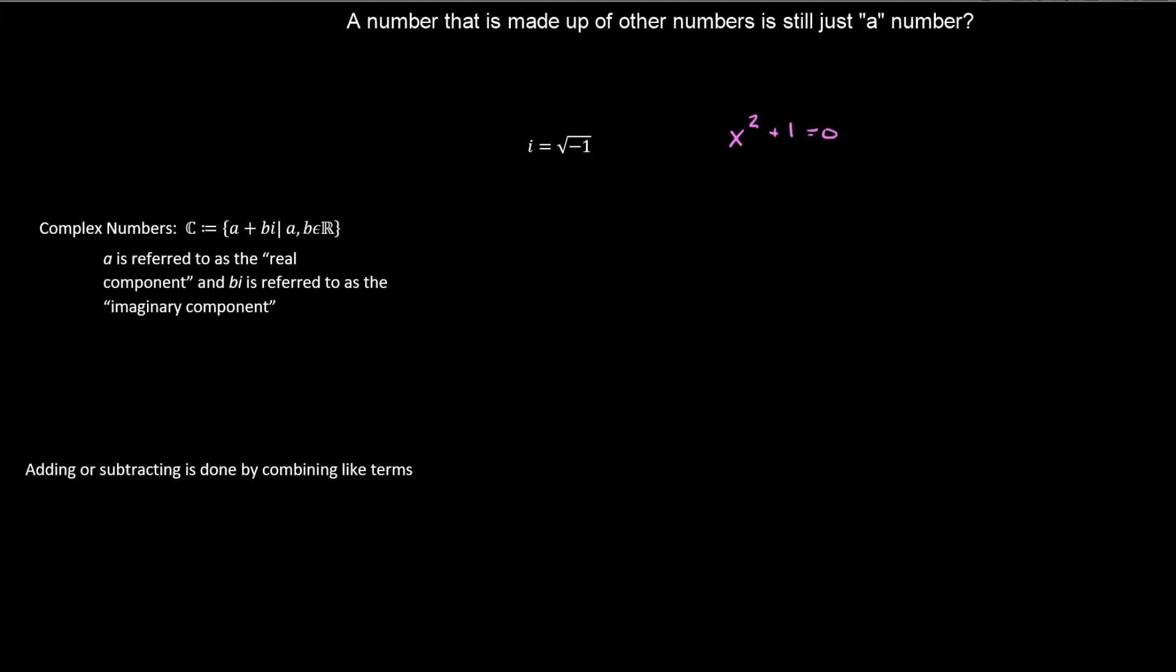Complex numbers are made up of the real numbers and the imaginary numbers. The structure is a plus bi, where a and b are real numbers. It's sometimes referred to as components because they are components to a vector in the complex plane. A is the real component, and bi is the imaginary component.